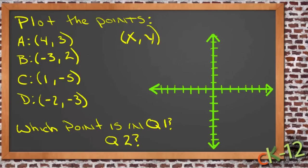Which means that the first number is our x-coordinate, which is our horizontal coordinate. And the second number is our y-coordinate, which is our vertical coordinate.